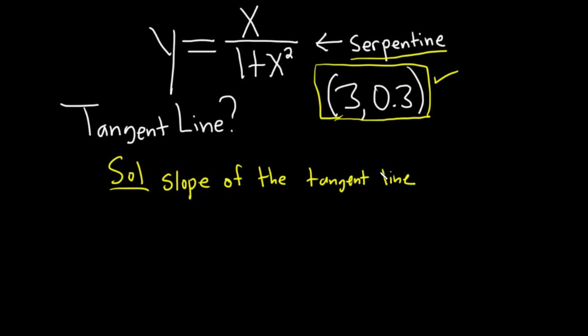The slope of the tangent line is going to be the derivative of the function. In this case, we want the tangent line at this ordered pair, so the slope of the tangent line is going to be the derivative at 3. We just have to find the derivative of this function and then plug in 3.